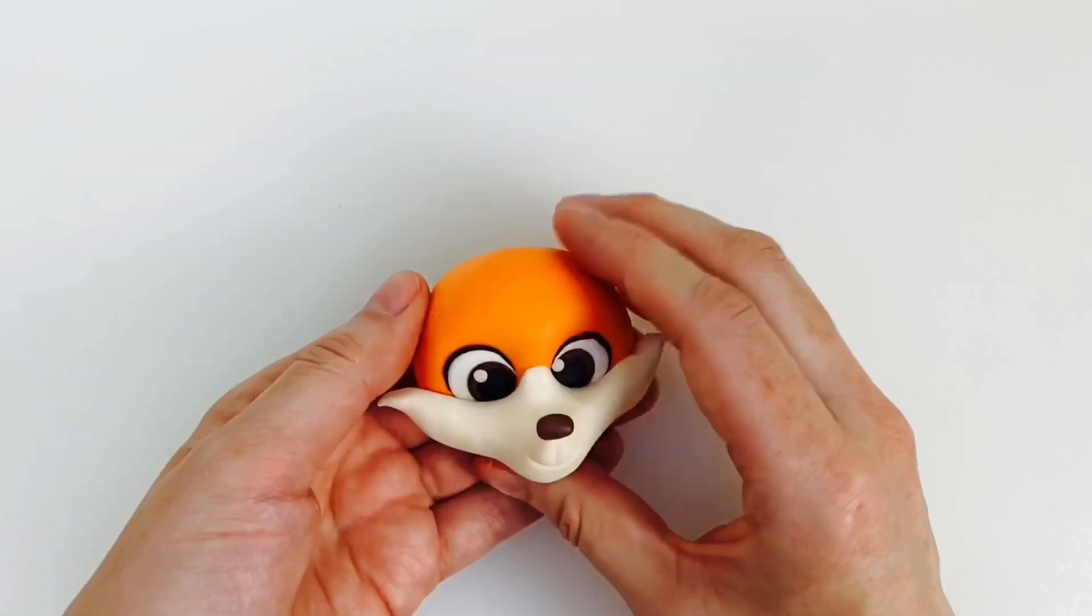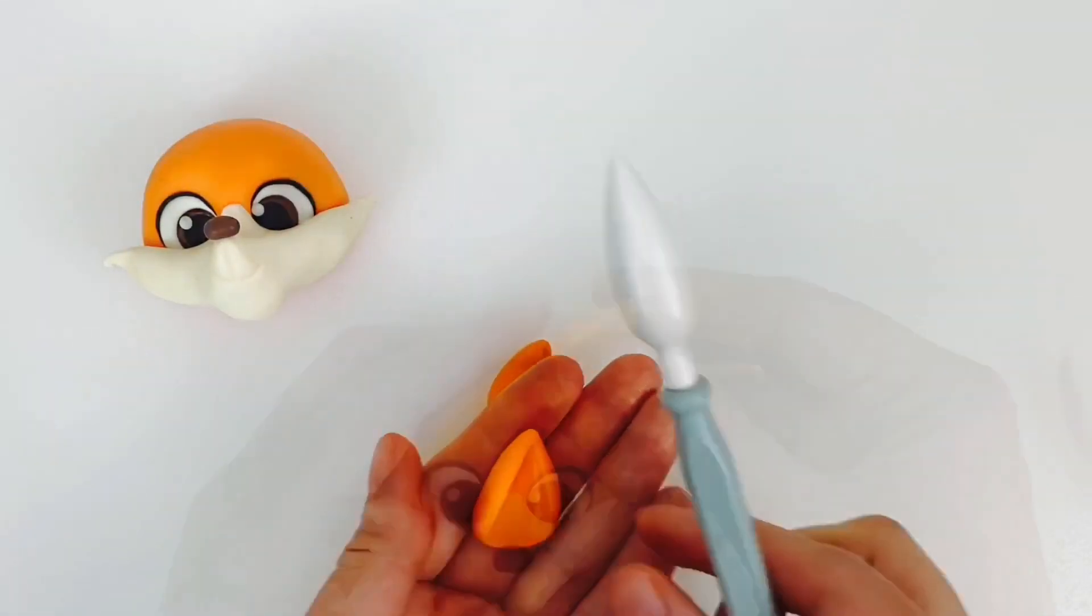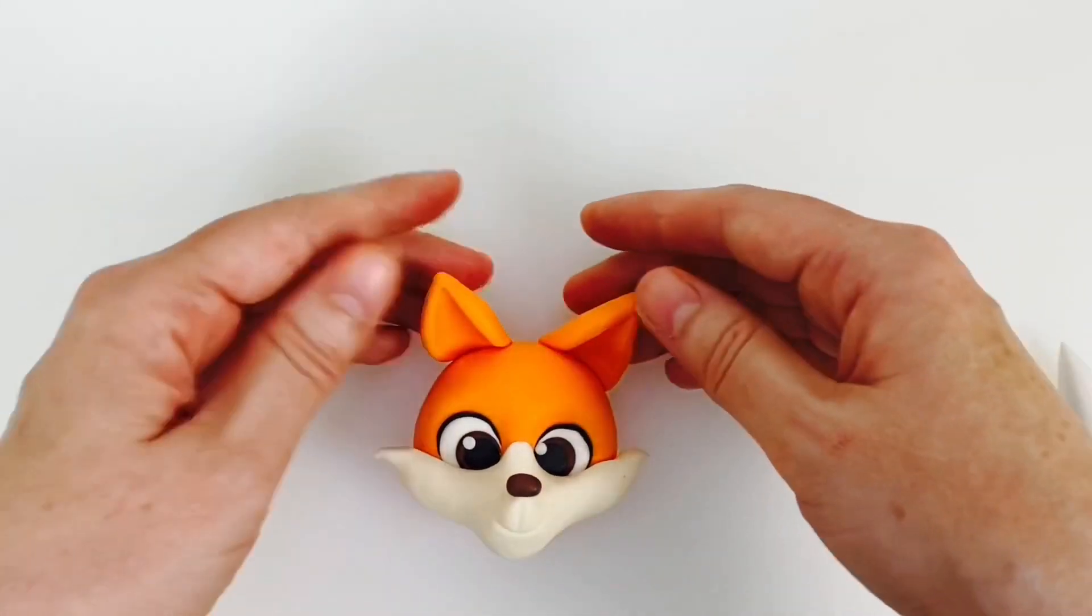You'll need 6.5 grams of orange modeling paste for each ear. Roll into a cone and then push the bulbous cone tool into the paste. Shape the paste around the cone to create a rounded shape.